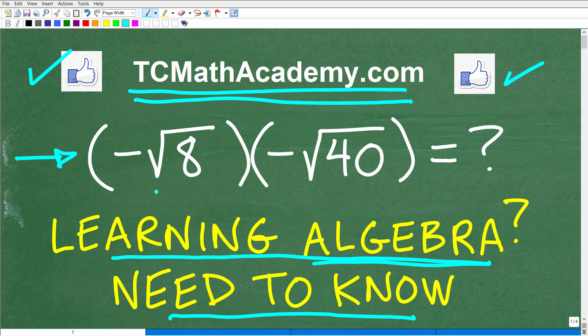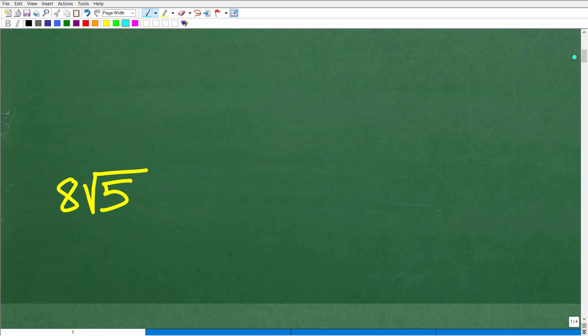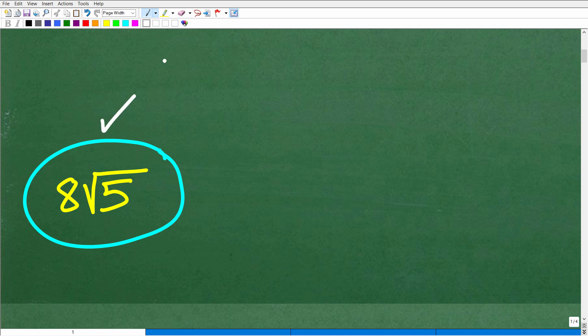So again, we have negative square root of 8 times negative square root of 40. What is this all equal to when it's all said and done? Hopefully you came up with this answer right here: 8 times the square root of 5. This would be considered the correct answer.